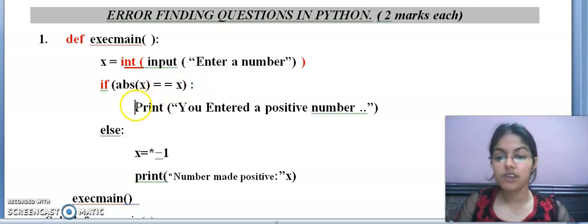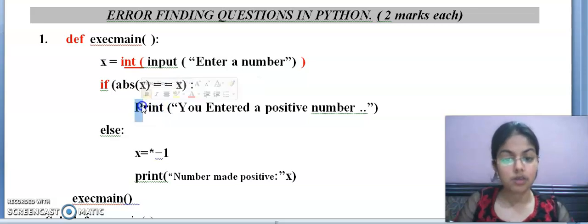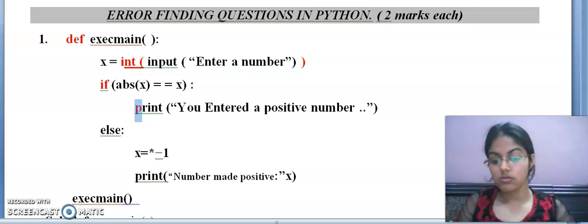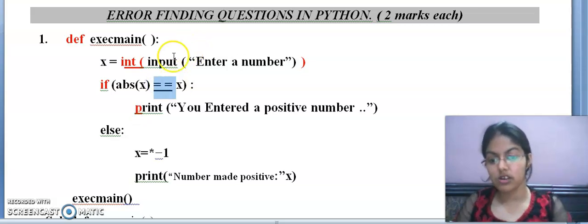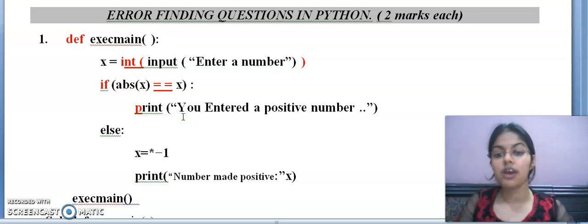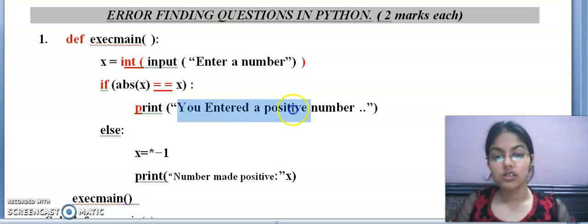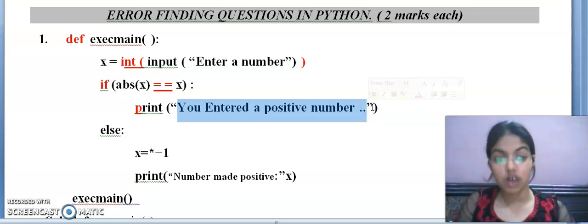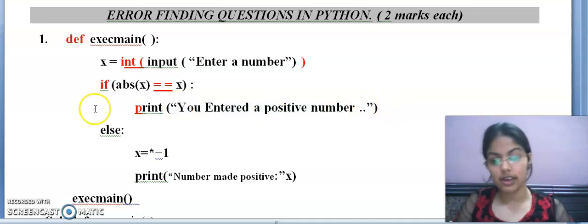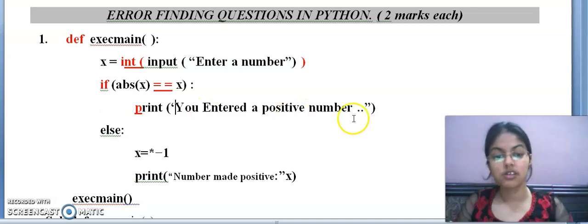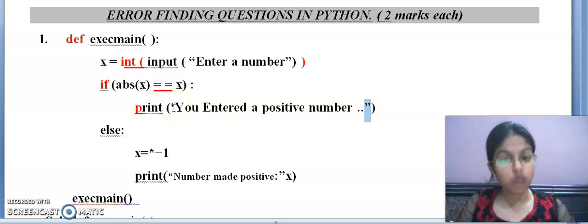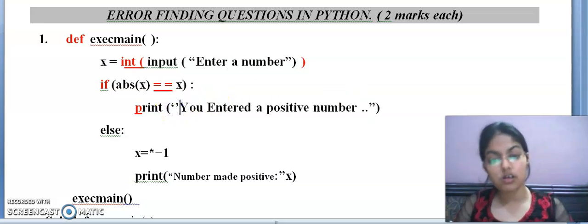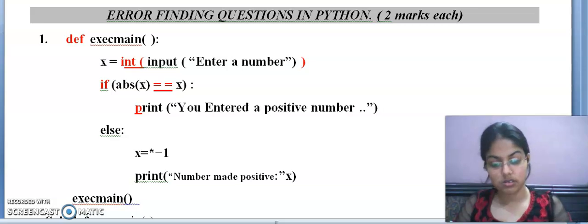If there is a comparison happening. For comparison, instead of this equals to, double equals to operator will be used. Equals to operator is used to assign the value to a variable, but here we are comparing. For comparison, always double equals to operator is used. This print function - print's P will be small. This is a print statement. If there were no double quotes, that would also be an error. Double quote starts and double quote ends.